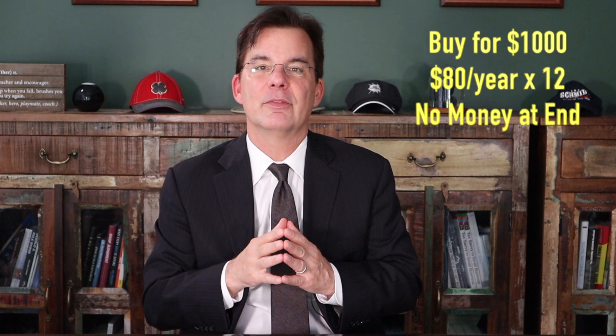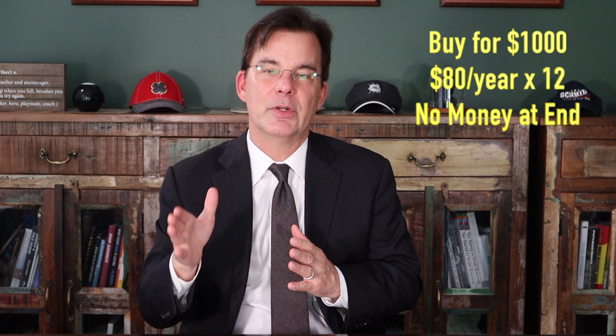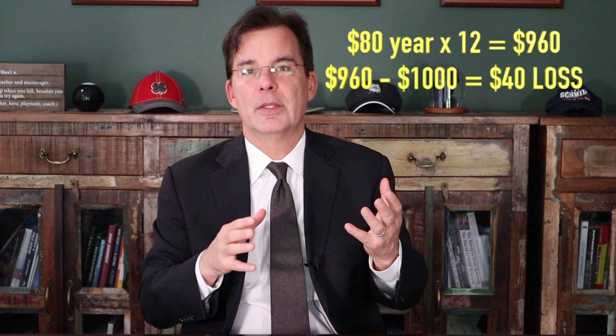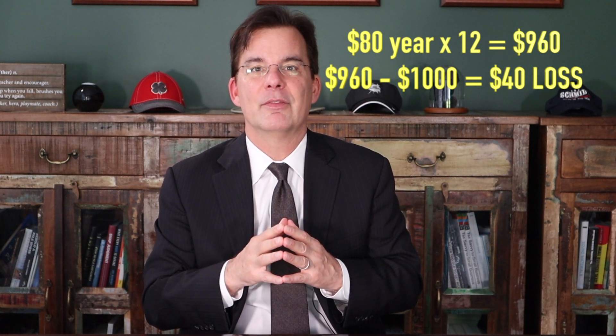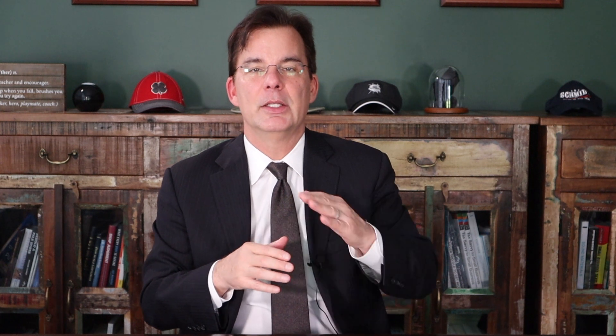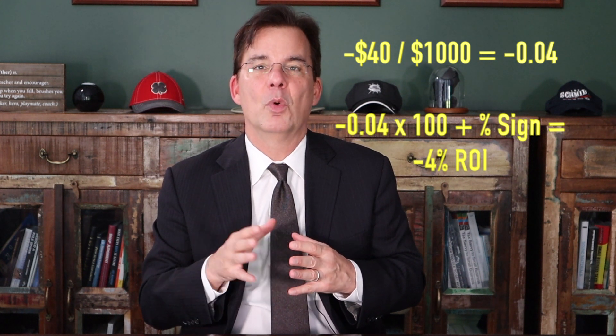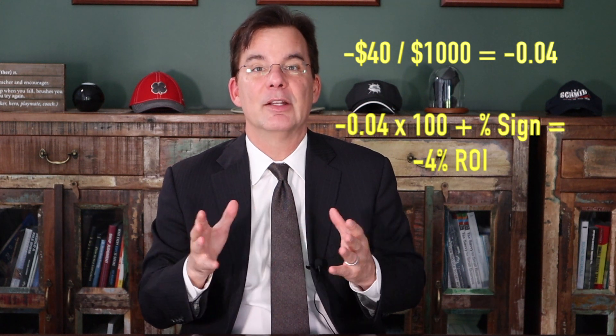Now I'm going to show you how to identify negative ROI — this is really important. We'll use an annuity because you see this more often than you'd expect from insurance companies and others who assume you can't do basic math. Let's say you bought an annuity for $1,000, but instead of $100 a year, they give you $80 a year for 12 years. That's 80 times 12, or $960. You paid $1,000 and they're promising you $960 back — that's a negative $40 return, a net loss. Divide negative $40 by $1,000 and you get negative 0.04. Multiply by 100 and that's a negative 4% ROI.